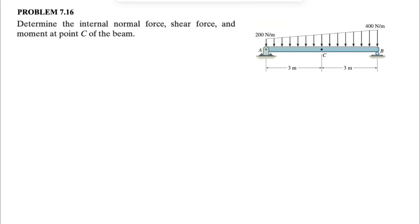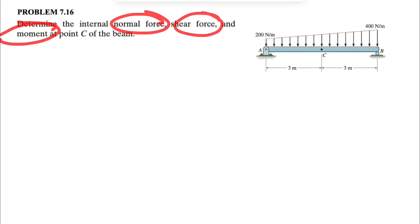Hey guys, let's see how we can solve question 16 from chapter 7 of the Hibbeler textbook on engineering mechanics. In this one we need to determine the internal normal force, shear force, and bending moment at point C of the beam. As always, we'll start with the free body diagram of the whole beam to find the reactions at supports A and B, and after that we'll do a section at point C to find the internal forces.